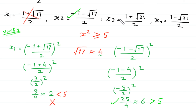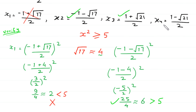In the same way, checking x3: the square of 1 plus square root of 21 over 2 is greater than 5, so x3 is a valid solution. However, the square of x4, which is 1 minus square root of 21 over 2, is less than 5, so we reject x4. Finally, we have two valid solutions: x2 equals negative 1 minus square root of 17 over 2, and x3 equals 1 plus square root of 21 over 2.